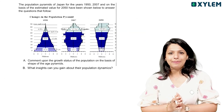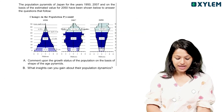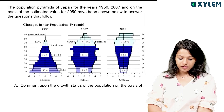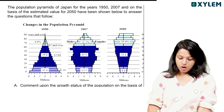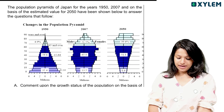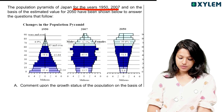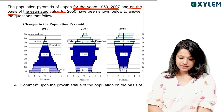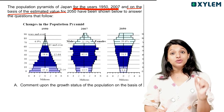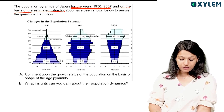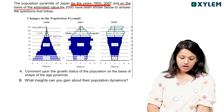From the sample questions, one question is about the population pyramid of Japan. The population pyramids of Japan for the years 1950, 2007, and estimated values for 2050 have been shown. Answer the questions that follow.